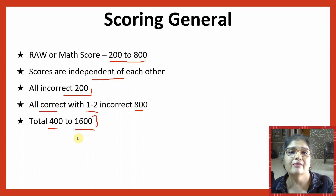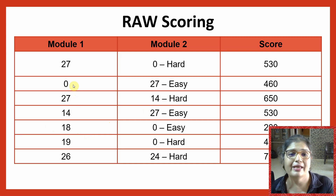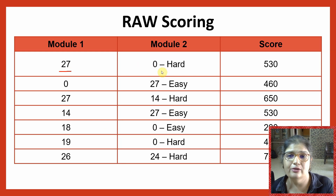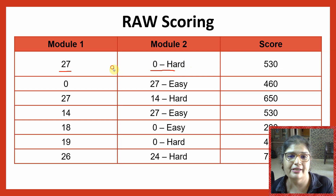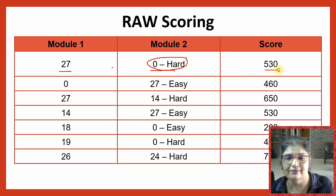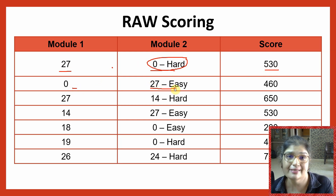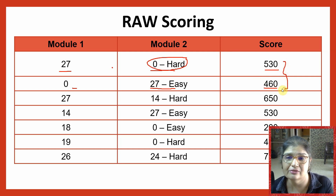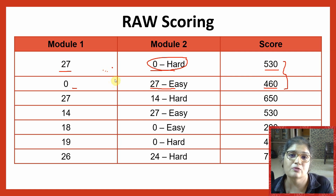Let's see the possibilities and nuances with respect to scoring. If you get all questions right in module one and no questions right in module two — because you get everything right in module one, your module two will be a hard module two — you will get a score of 530. If you get everything wrong in module one but everything right in module two, which is the easy module, you will get a score of 460. So it's very clear that you have to do well in module one. Module one is more important in terms of scoring than module two.